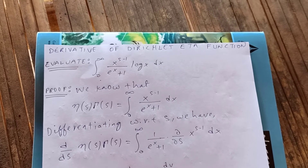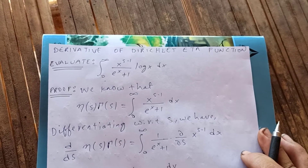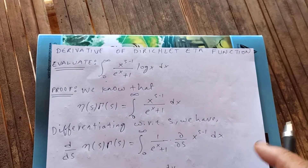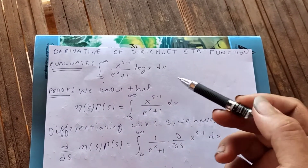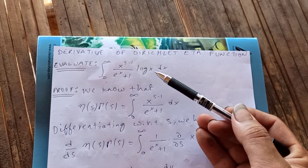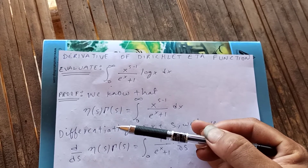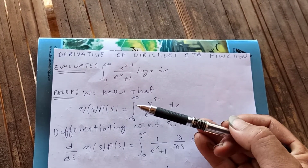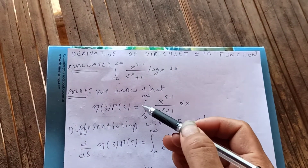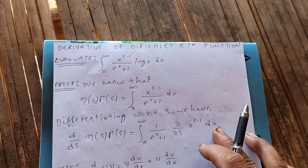Thanks for watching my video today. Let's evaluate the integral derivative of the Dirichlet eta function. The eta function integral we want to evaluate is from zero to infinity of x to the s minus 1, upon e to the x plus 1, times log x dx. For the proof, we know that η(s)·Γ(s) equals the integral from zero to infinity of x to the s minus 1 upon e to the x plus 1 dx. This is the well-known integral representation of the eta function.